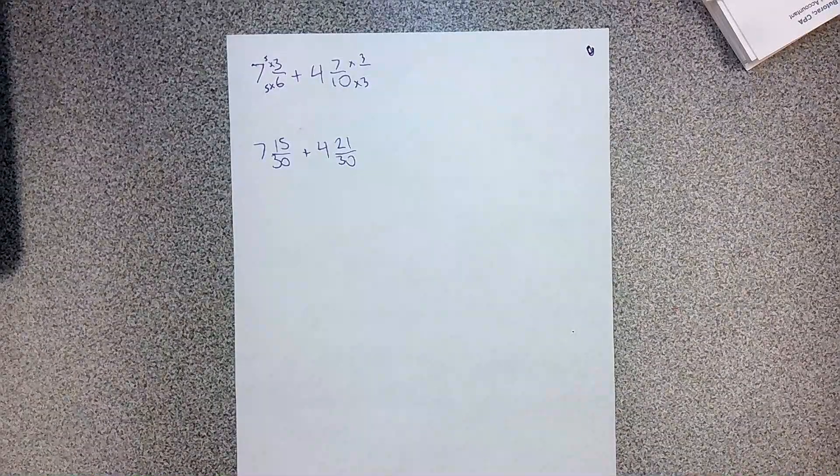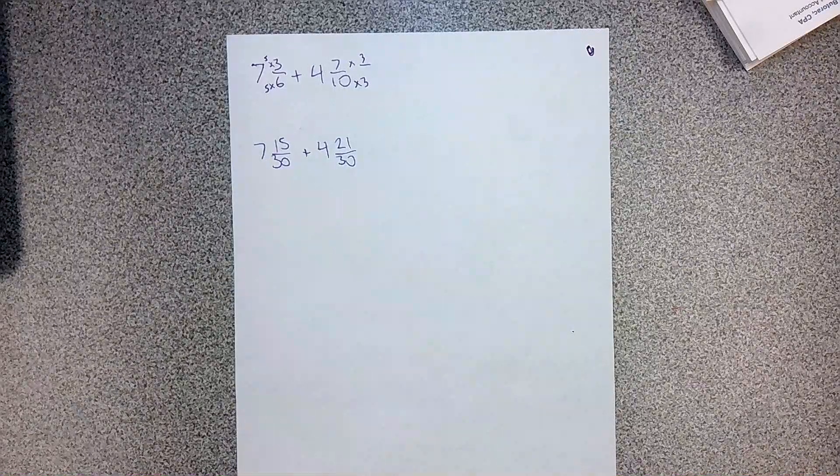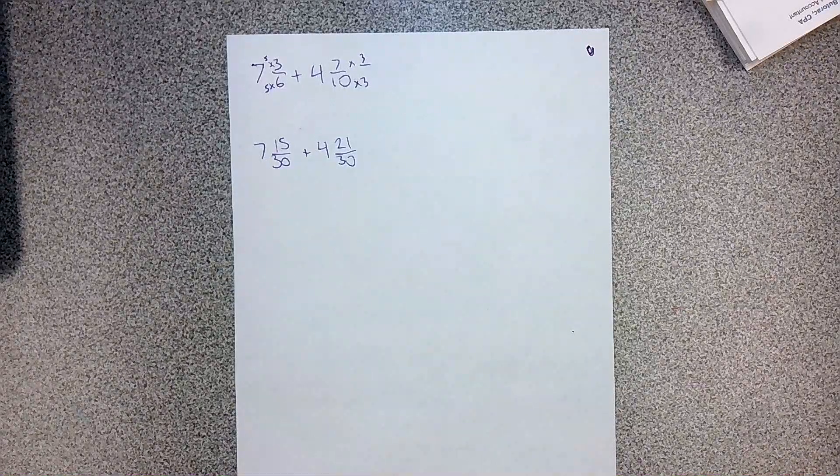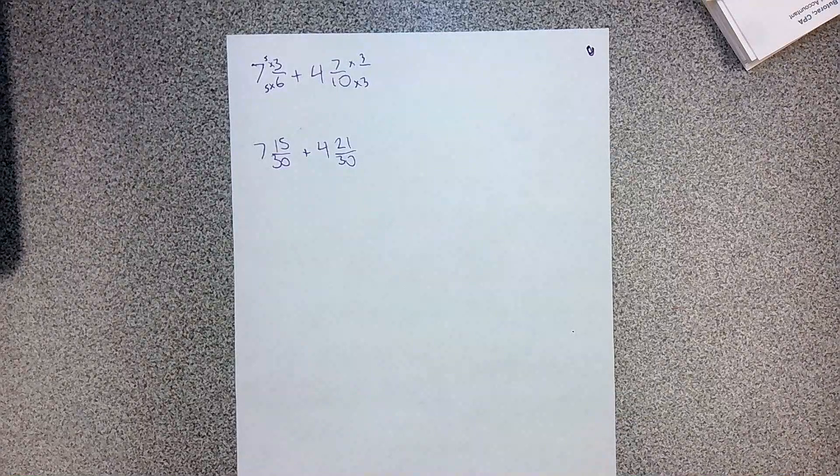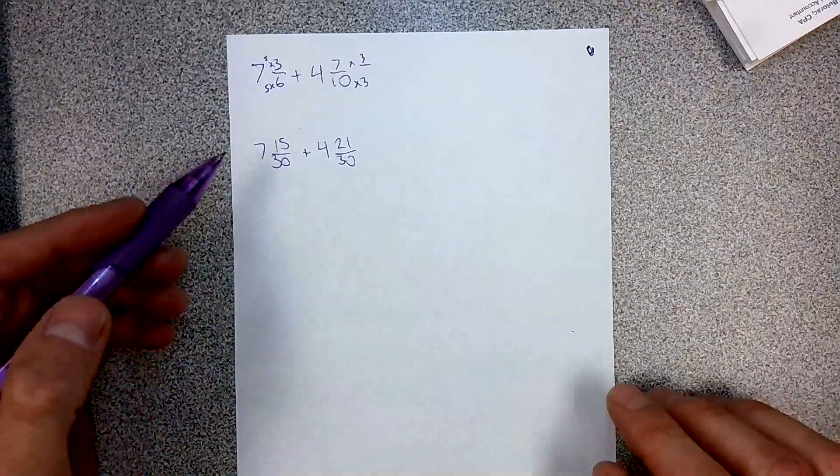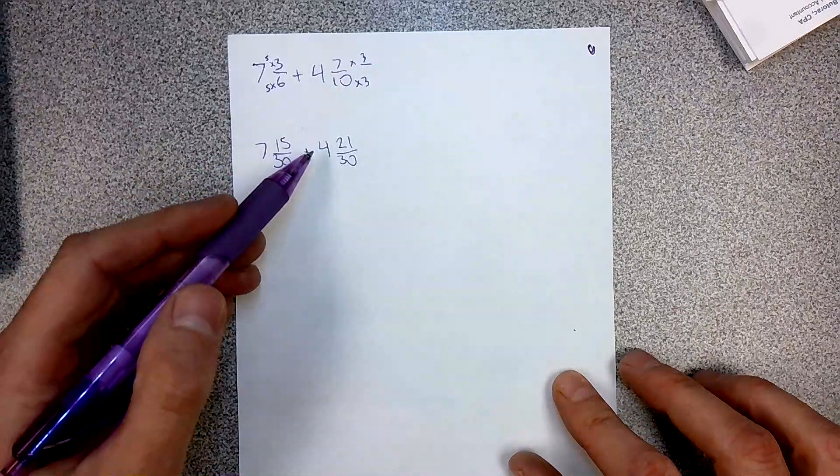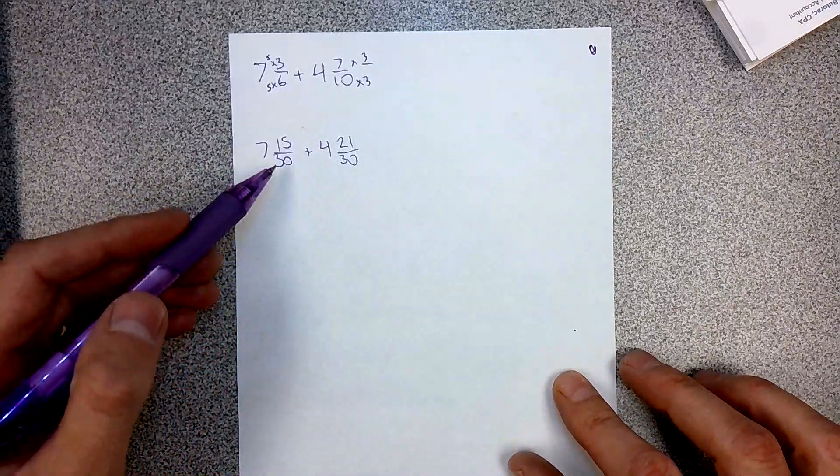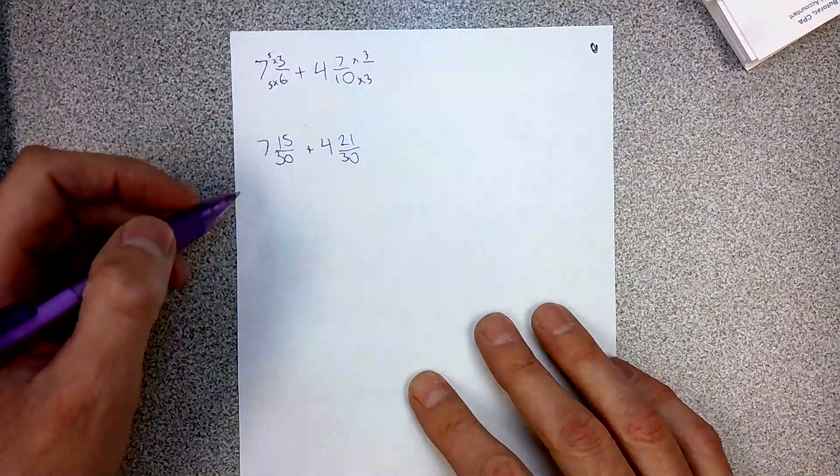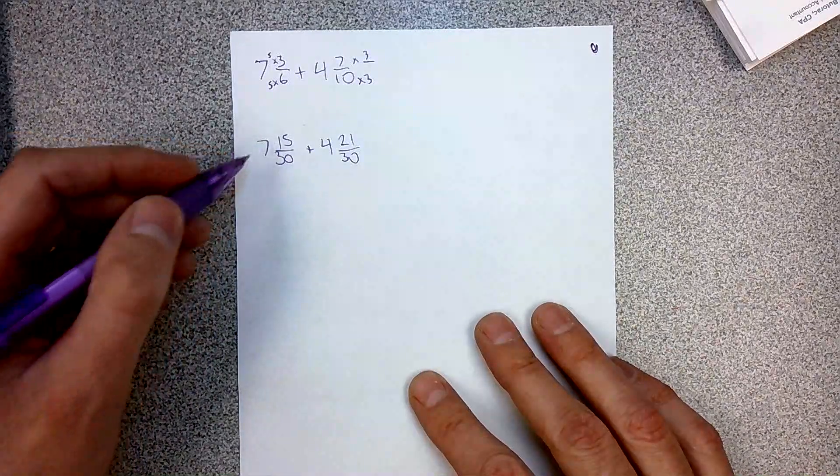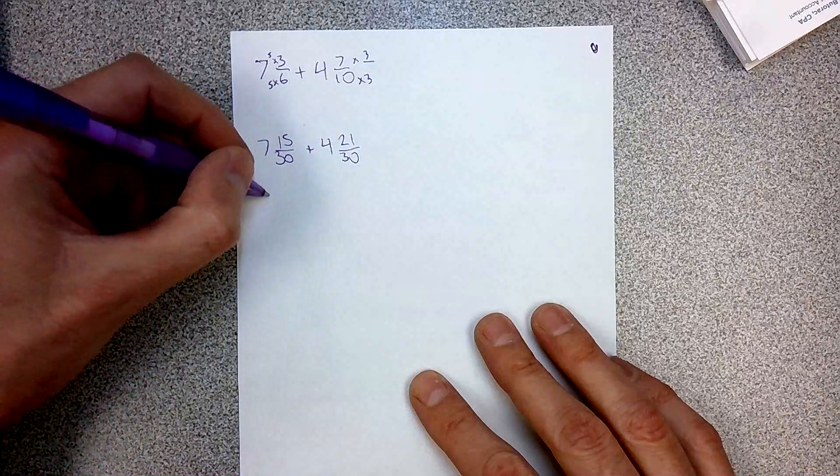There's a couple ways you can mess with this. What I'm going to recommend, just to be as clear as possible and as straightforward as possible, if you have a mixed number, I'm going to recommend you make it into an improper fraction. So I'm going to do 30 times 7, which is 210, plus 15, which is 225.